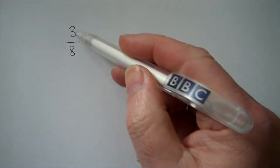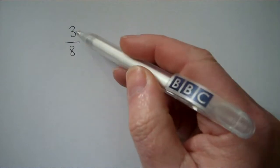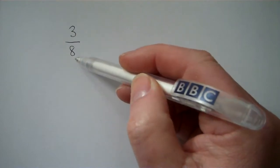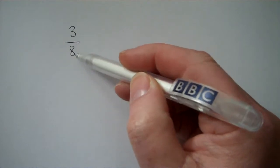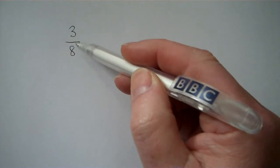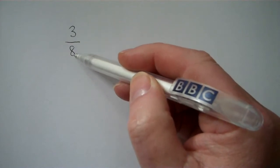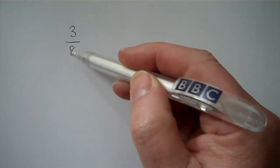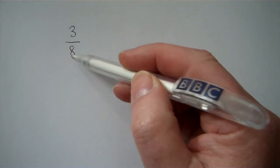Well we think of this in three possible ways. We can either say it's 3 eighths, or it's 3 out of 8, or it's 3 divided by 8. And it's that third meaning which is going to help us here, we've got 3 divided by 8.